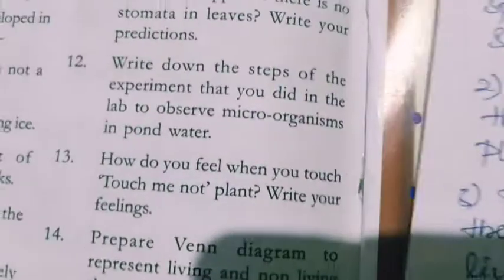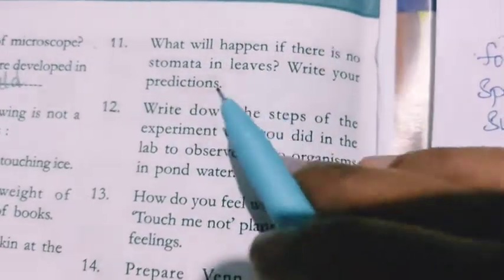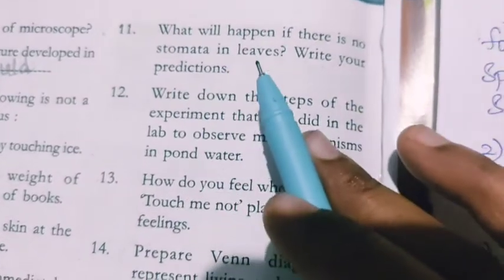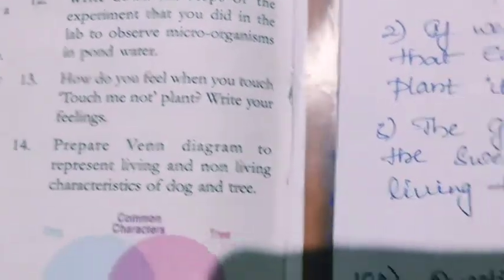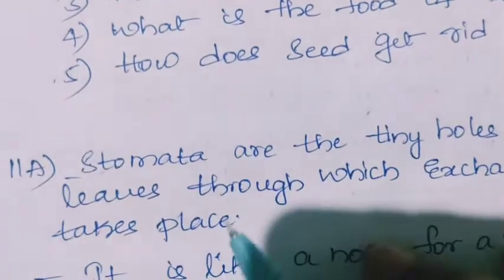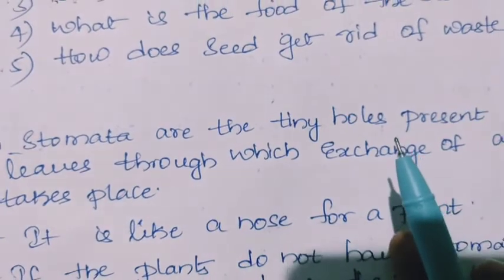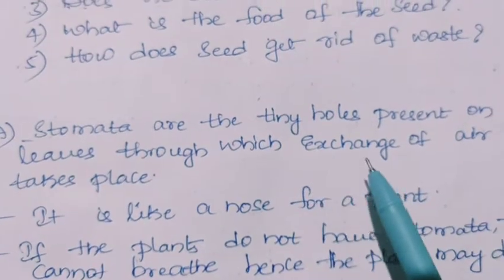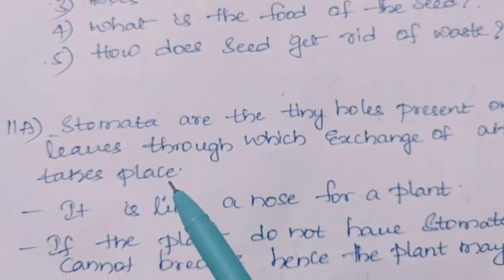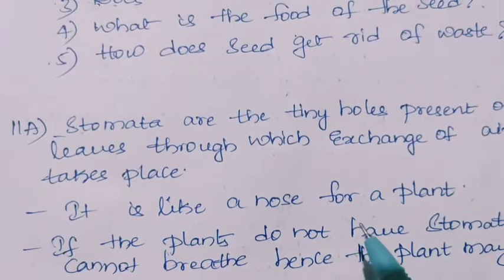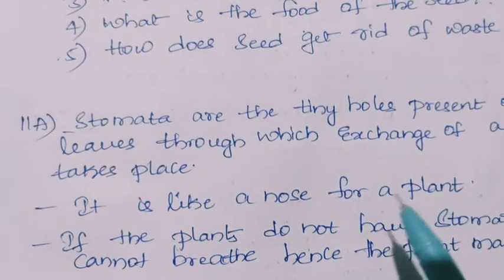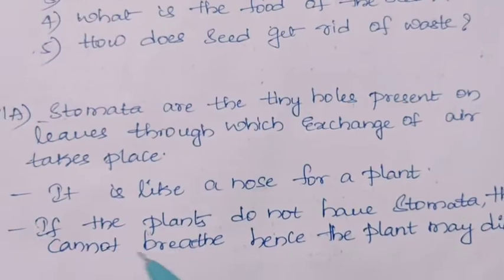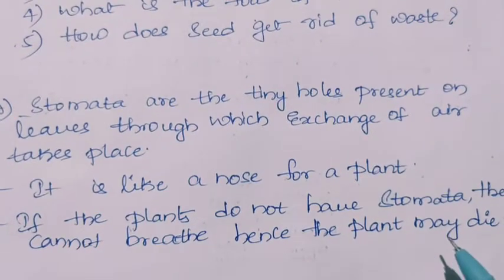Eleventh question: what will happen if there are no stomata in leaves? Stomata are the tiny holes present on leaves through which exchange of air takes place — it is like a nose for a plant. If plants do not have stomata, they cannot breathe. Hence, the plant may die.